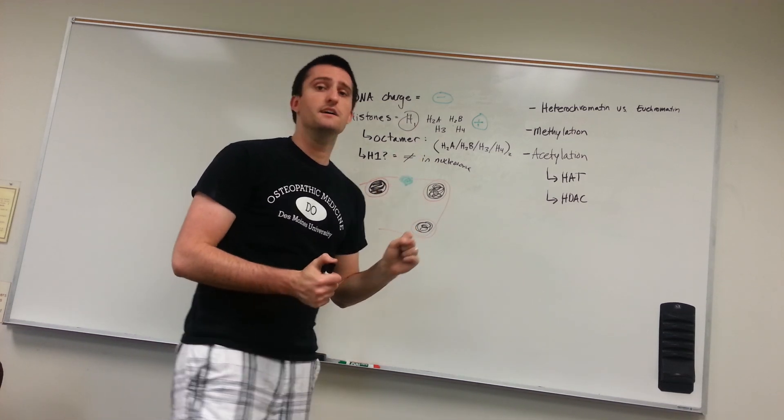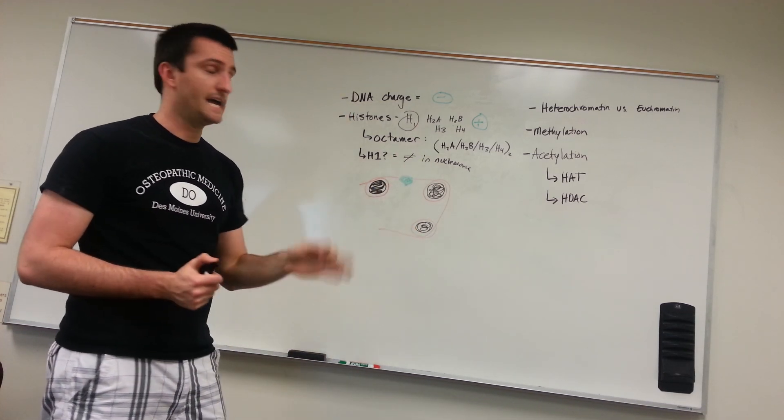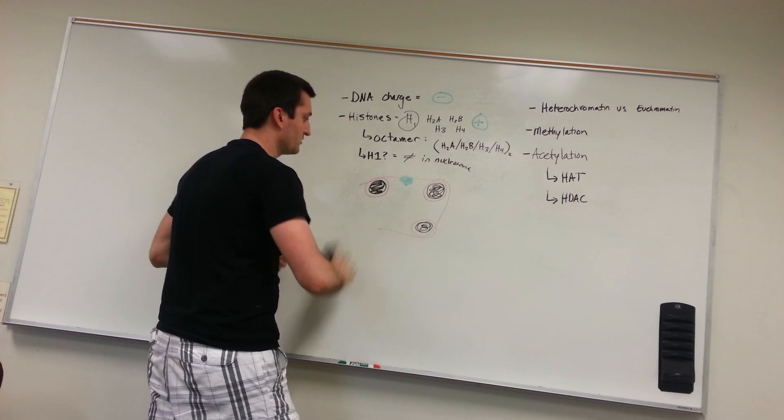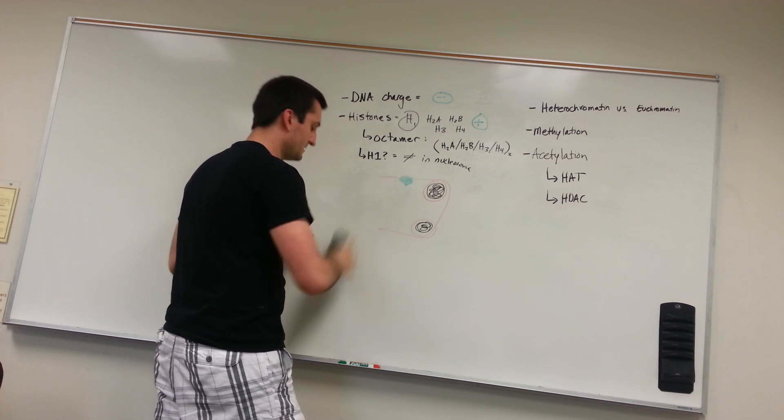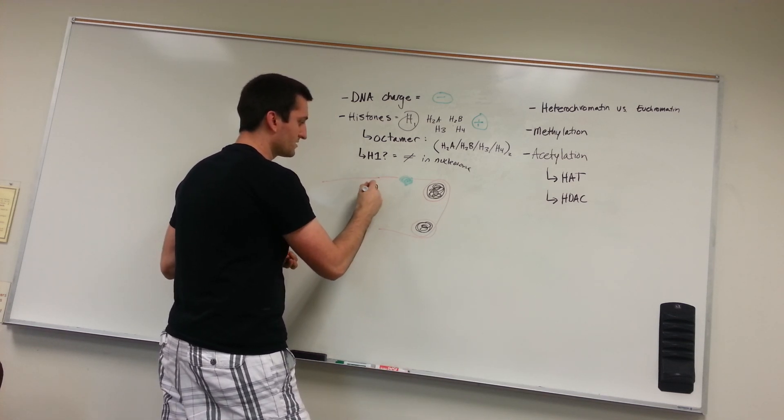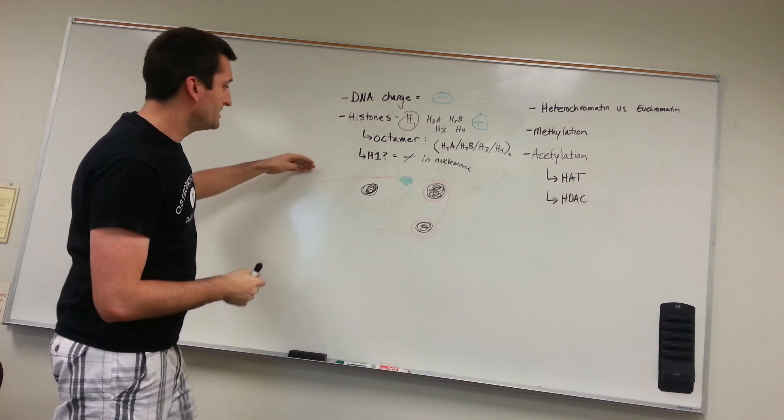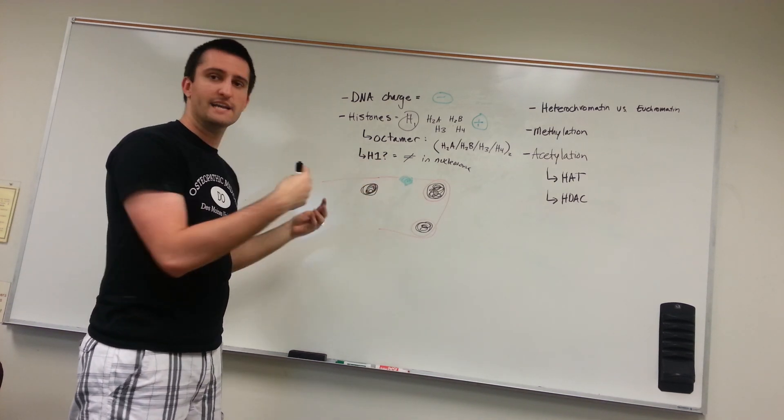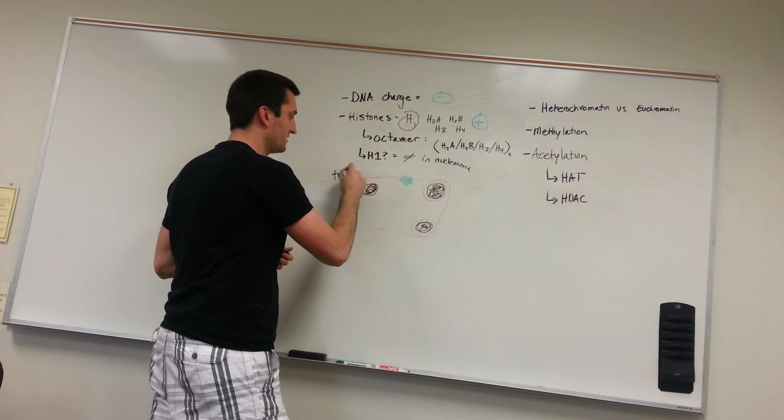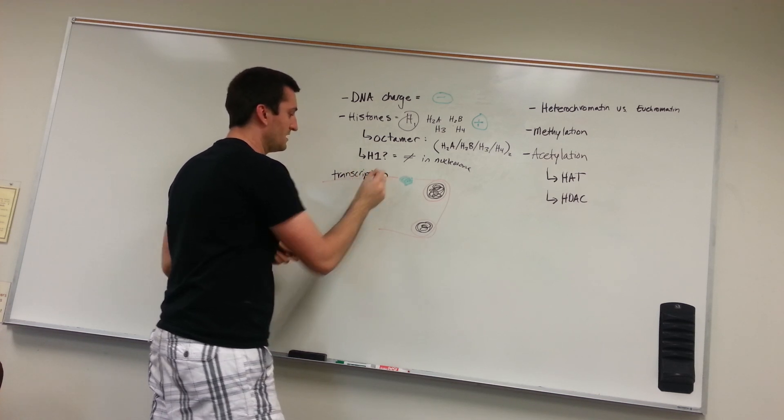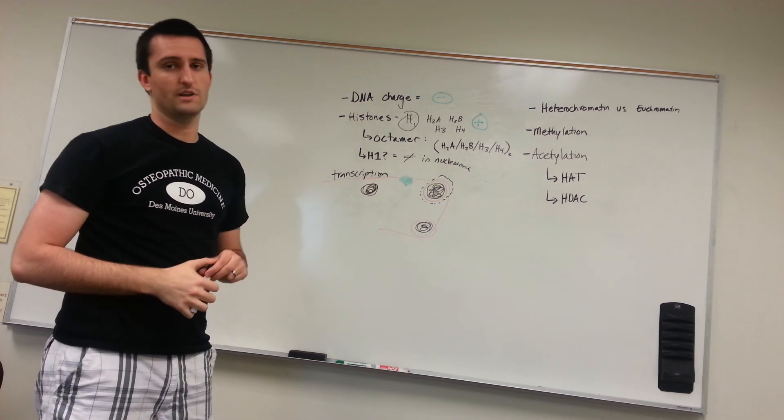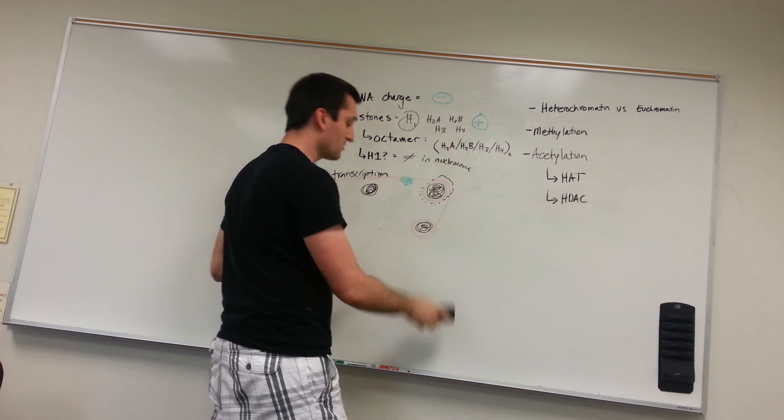Euchromatin, on the other hand, would therefore be transcriptionally active. What happens there? Well, we're going to have dissociation of the DNA. No longer is this histone and DNA going to be held together. Our DNA will be free. Our histone octamer will be by itself. When DNA is nice and free, when it's not wrapped around tight over the protective histones, it will be transcriptionally active. Transcription can take place now. However, here, transcription cannot take place because it's wrapped around so tightly.